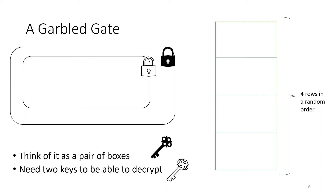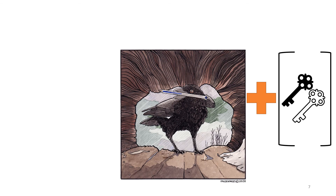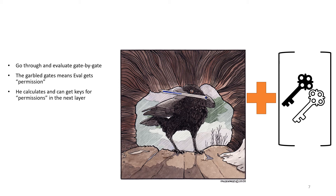Usually you have to try to take the next output and decode it with the two keys you got from the previous step on each of the four rows, and one of those outputs will look valid, allowing you to continue. So using his keys the evaluator can go through and evaluate gate by gate. If the two keys are the correct ones for the row, it unlocks the correct value and the evaluator has permission to go on to the next gate, getting keys layer by layer in the circuit.